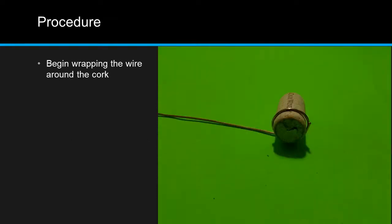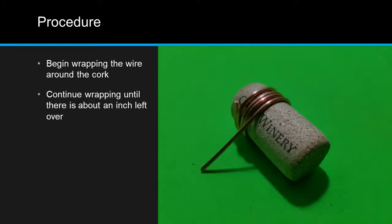Begin by wrapping the wire tightly around the cork. Continue wrapping until there is about an inch of straight wire left over.